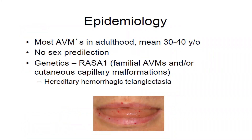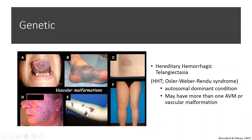Most AVMs do occur in young adulthood, not mostly in children. There's no real sex predilection, and if you have certain genetic variations like RASA-1 or HHT — hereditary hemorrhagic telangiectasia — your risk is slightly higher than average of harboring an AVM. These are some pictures of vascular malformations in HHT that may have an association with having a brain AVM.